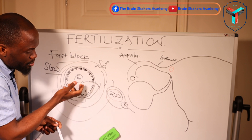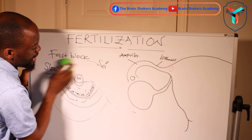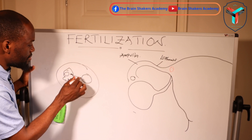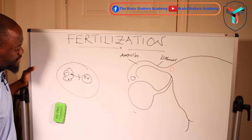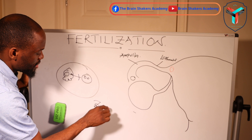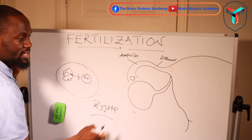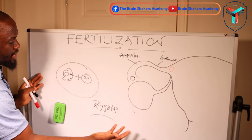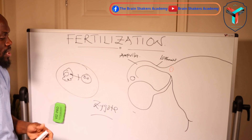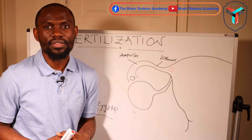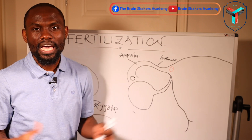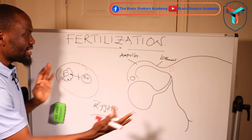Once all this has happened and the ovum contains the male pronucleus, the nucleus of the ovum condenses. The male pronucleus then fuses with the female pronucleus, resulting in what is called a zygote. Once you have a zygote, fertilization is complete. The zygote will then undergo mitotic divisions — cleavage — to produce a human being, which is covered further in embryology.